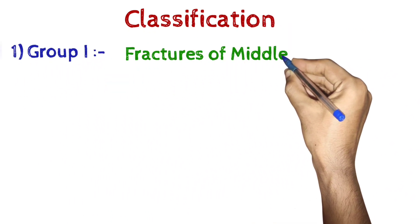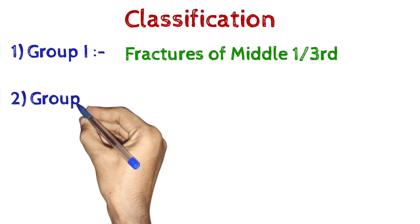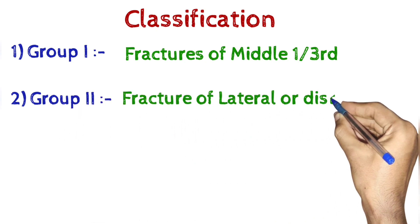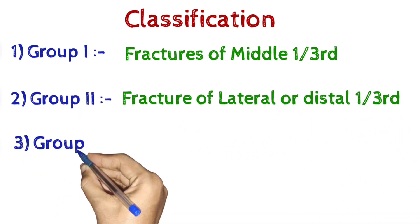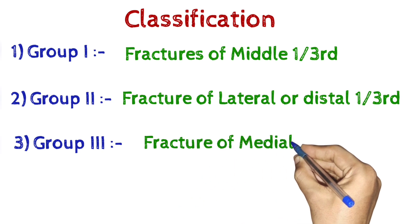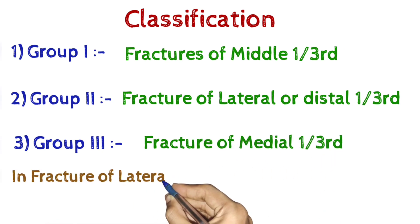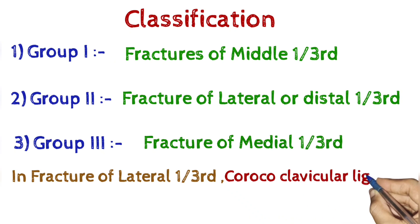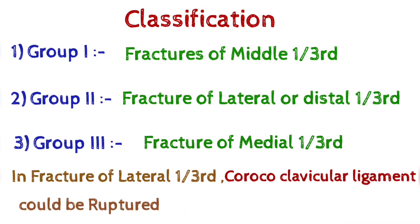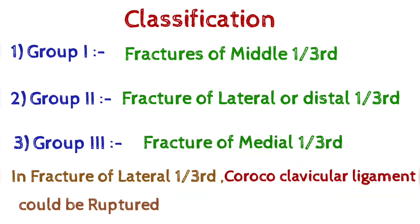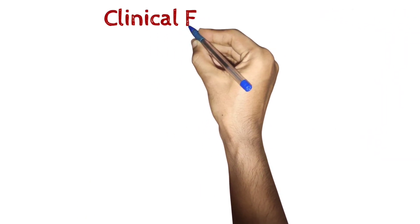Classification: 1. Fractures of middle one-third. 2. Fracture of lateral or distal one-third. 3. Fracture of medial one-third. In fracture of lateral one-third, coracoclavicular ligament could be ruptured.